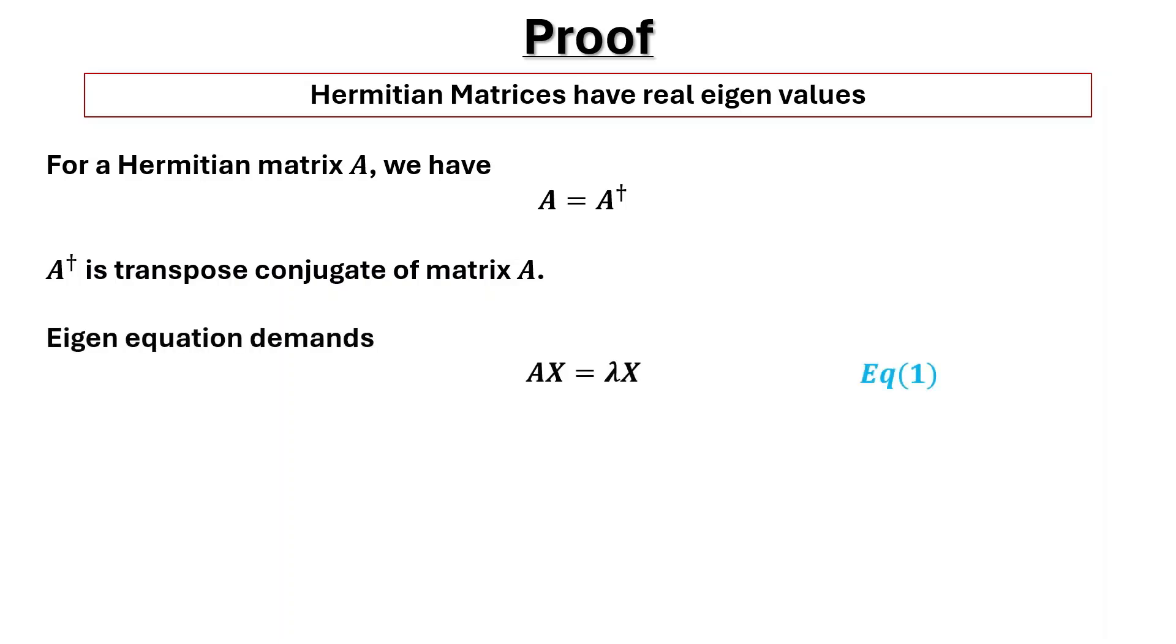Eigenequation demands AX is equal to lambda X as given in equation 1, where lambda is the eigenvalue of matrix A and X is the corresponding eigenvector.